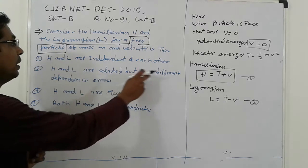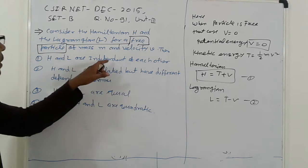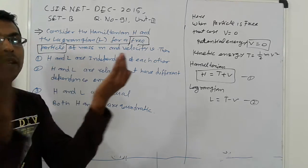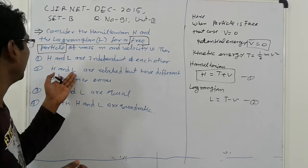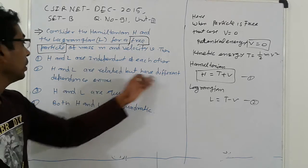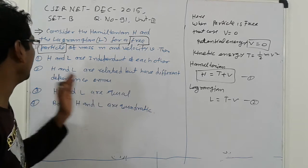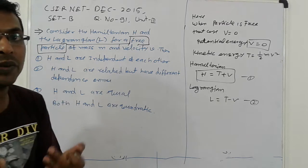H and L are related but have different... H and L are independent of each other. It means both are independent of each other. Otherwise possible or not? H and L are related but both are different. We have different dependent on V. That means we have taken two different velocities V1, V2 and something.